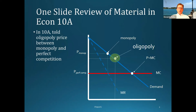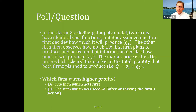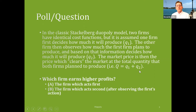To lead into that topic, I have a question for you. We don't actually have a poll here because this is a recorded lecture, but I still want you to try to think about what the answer will be. In the classic Stackelberg duopoly model, two firms have identical cost functions, but one firm decides how much it will produce first. The other firm, which we call the follower firm, then observes how much the first firm plans to produce, and based on that information decides how much it will produce — we'll call that Q2. The market price then clears the market at the total quantity both firms plan to produce. So the question is: which firm earns higher profits?